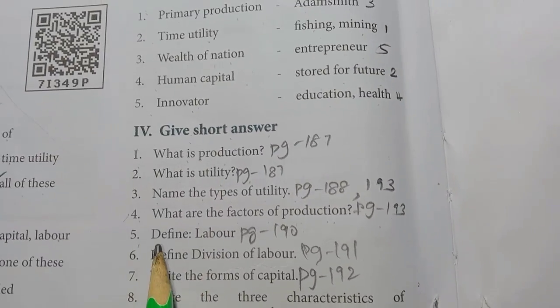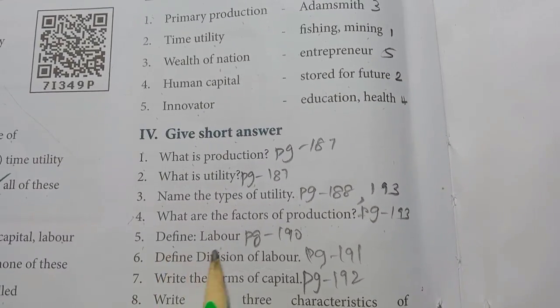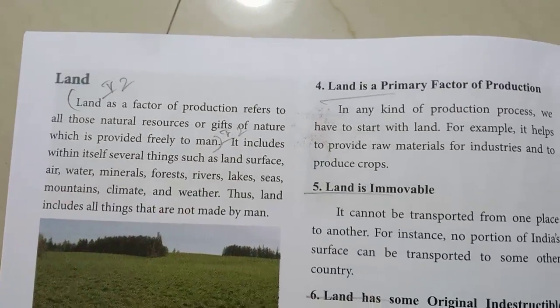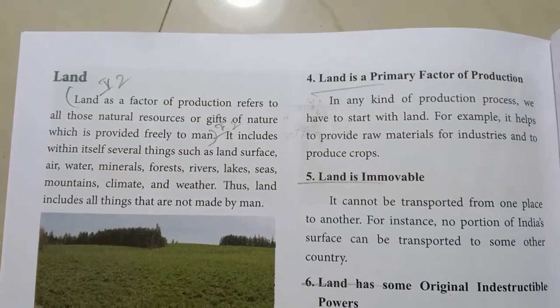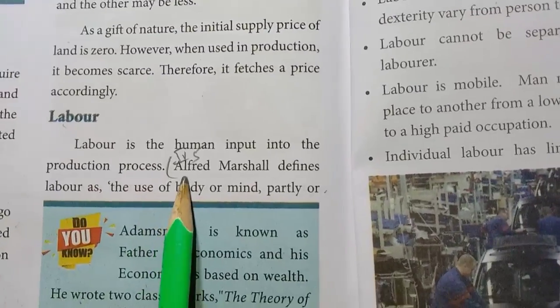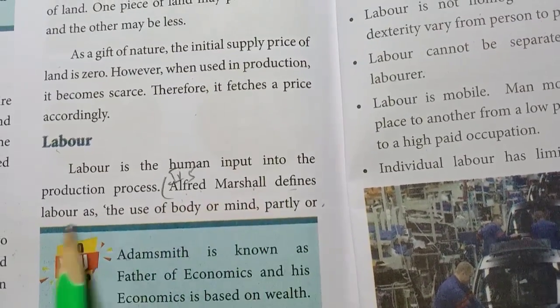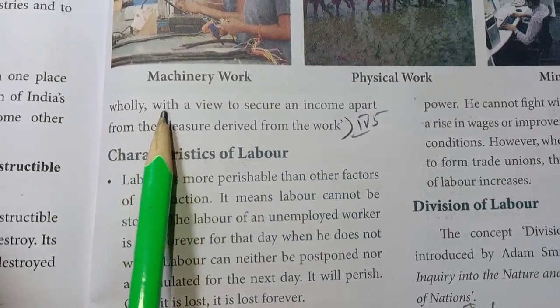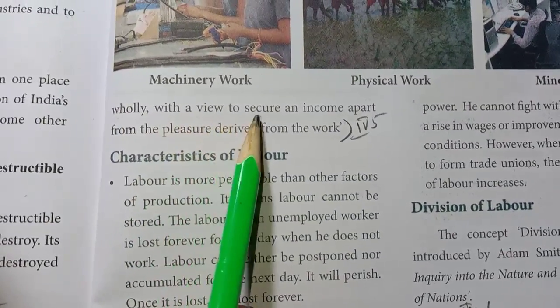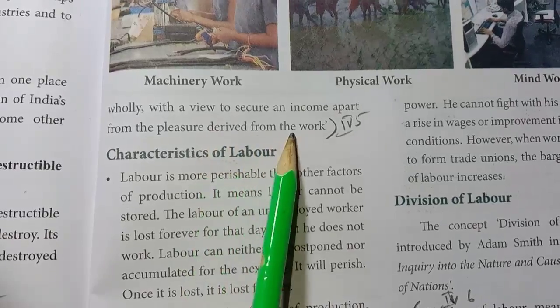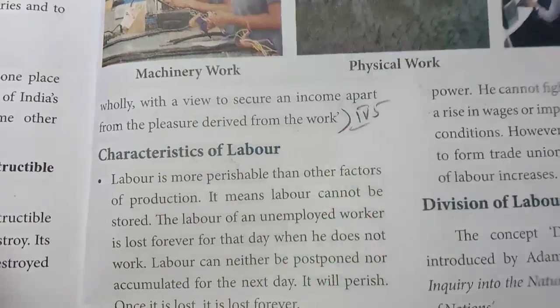Fifth one: Define Labour. Page No. 193, under the topic Labour. Alfred Marshall defines Labour as the use of body or mind partly or wholly with a view to secure an income apart from the pleasure derived from the work.